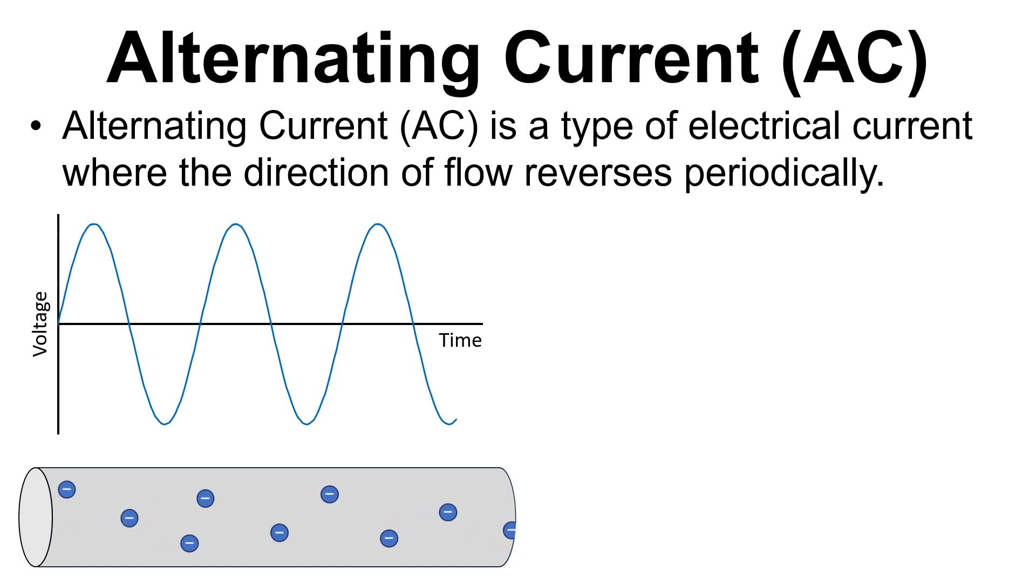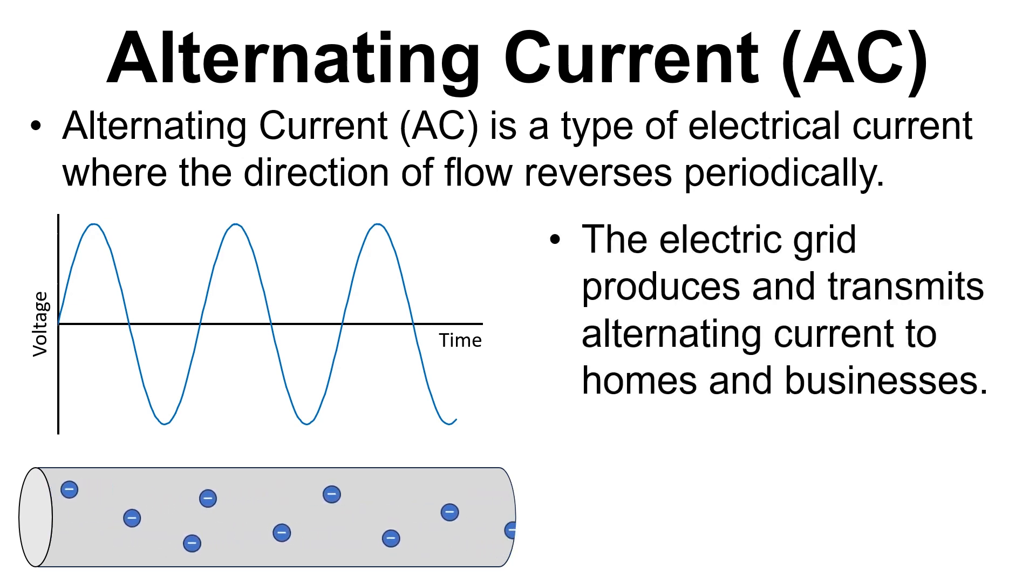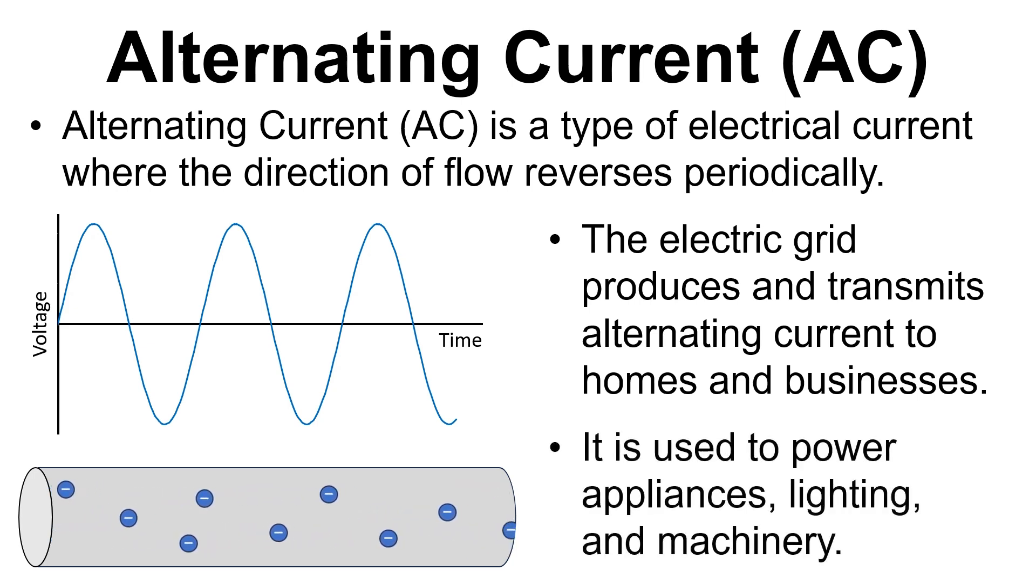Moving on to alternating current, this is a type of electrical current where the direction of flow reverses periodically. The electrical grid that powers homes and businesses produces and transmits alternating current. And it's used to power appliances, lighting and machinery.